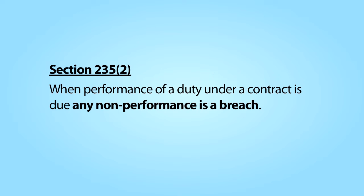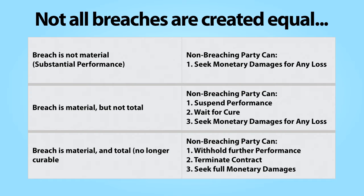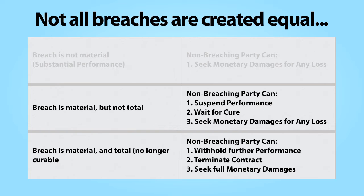Breaching a contract allows the non-breaching party to sue for damages that resulted from the breach. But not all breaches are equal. Some breaches impair the value of the contract to the non-breaching party to a much greater extent than do other breaches. Accordingly, depending on its severity, contract law allows different responses to a breach from the non-breaching party. The most severe breaches are material breaches. A material breach undermines the very value of the contract to the non-breaching party and disappoints the underlying expectations that led that party to enter into the contract in the first place.